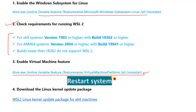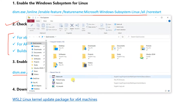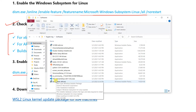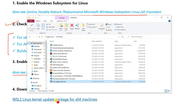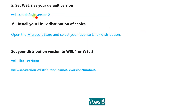Even though we supply the no-restart flag, I suggest restarting after these three steps. Then download the Linux kernel update package, which is about 14 MB from the Microsoft site, and install it on your system. After that, you can set your default WSL version to 2.